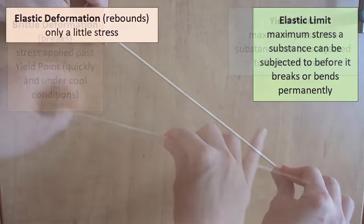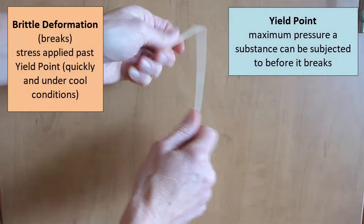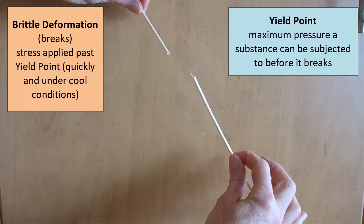There is another limit, the yield point of the rock. The yield point is the amount of pressure required to cause a rock to break. It, of course, will depend on the rock material and its strength.